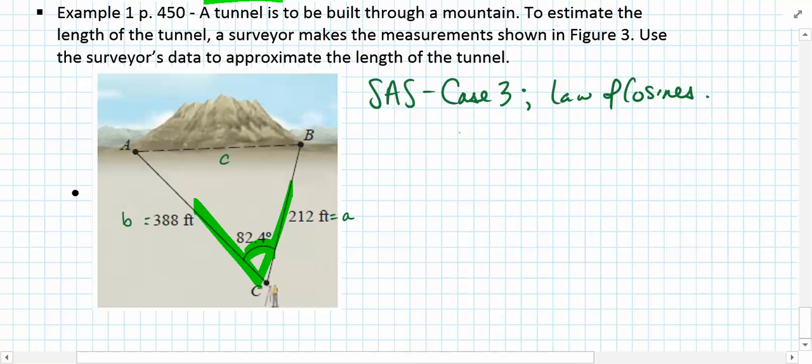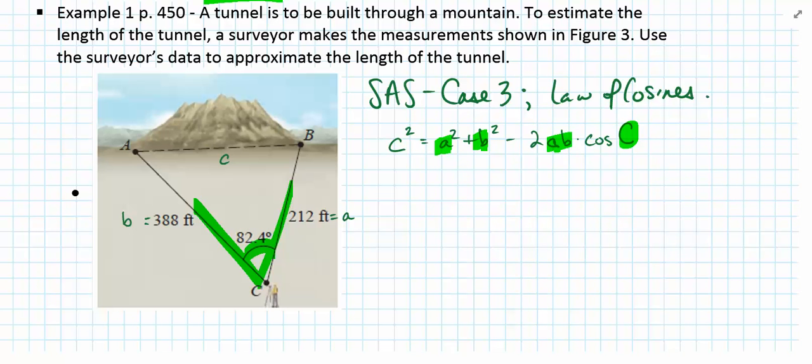Since we're looking for side length lowercase c, I might suggest using the law of cosines that looks like this: c squared equals a squared plus b squared minus 2ab times the cosine of angle c. I like using this one because we know what a and b is, so we have these four parts known for us, and we can make substitutions in each of these positions and very easily calculate the unknown side length c.